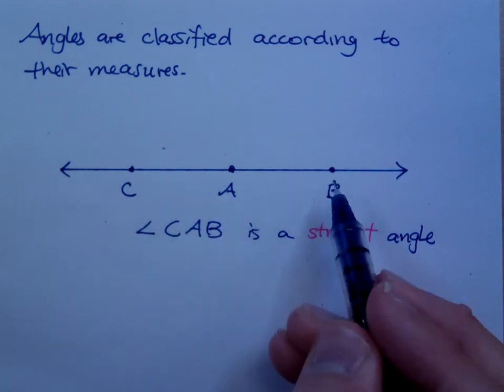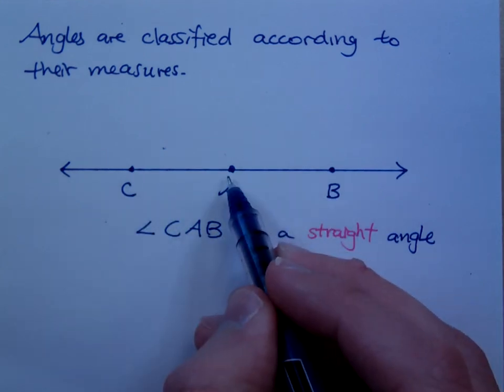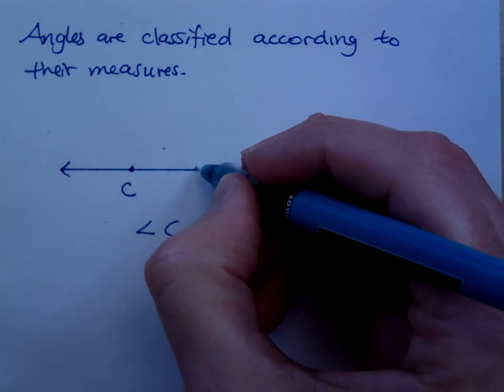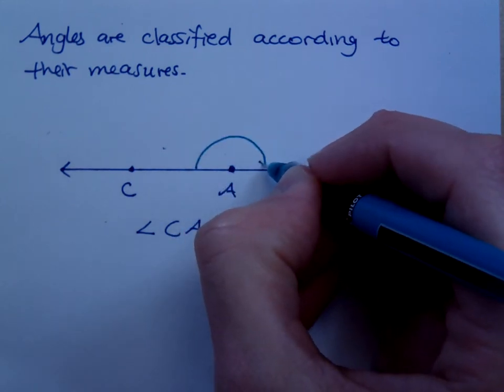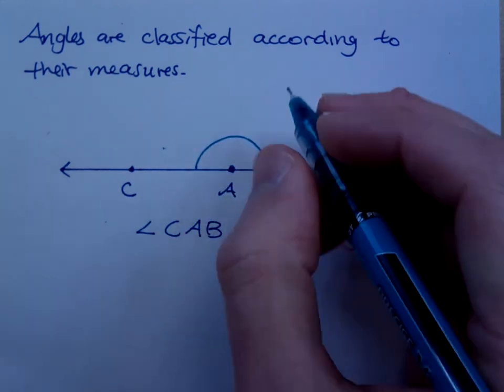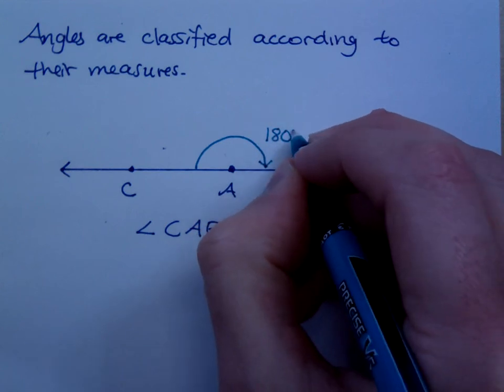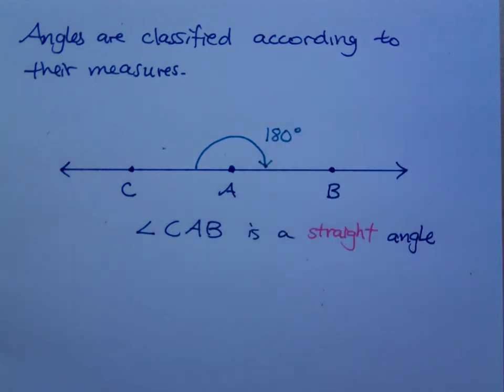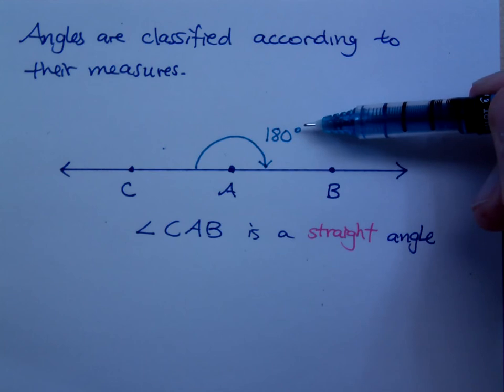So, CAB, where A is the vertex, what is the measure of this straight angle? 180. This is 180 degrees. Remember, we use this little symbol up here for degrees.